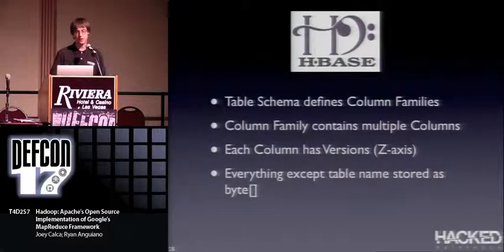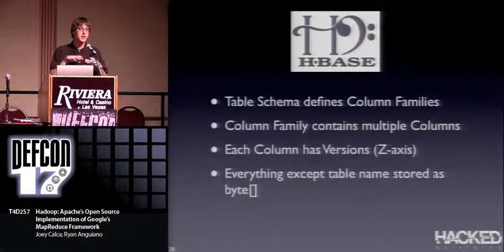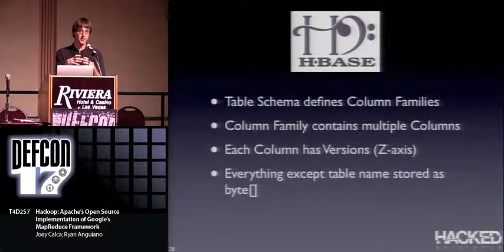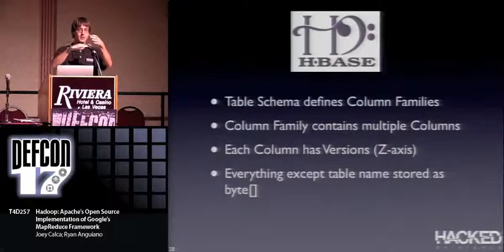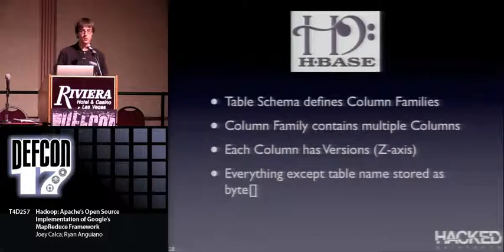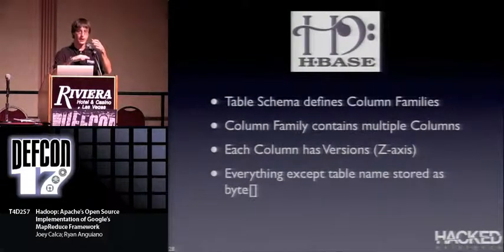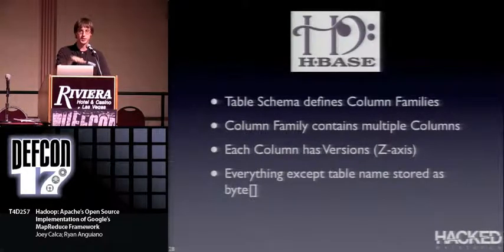The HBase table schema defines column families. Think of it as a database of databases: you have a row key and a column family, and inside each column family cell you have additional columns. On the Z-axis you have versions with timestamps — for example, when Google scrapes a web page today and again tomorrow, they drop it down on the Z-axis to the next version, so they can track changes over time on the same data set. Everything in the table except the table name is stored as a byte array, which works with HDFS for efficiency.